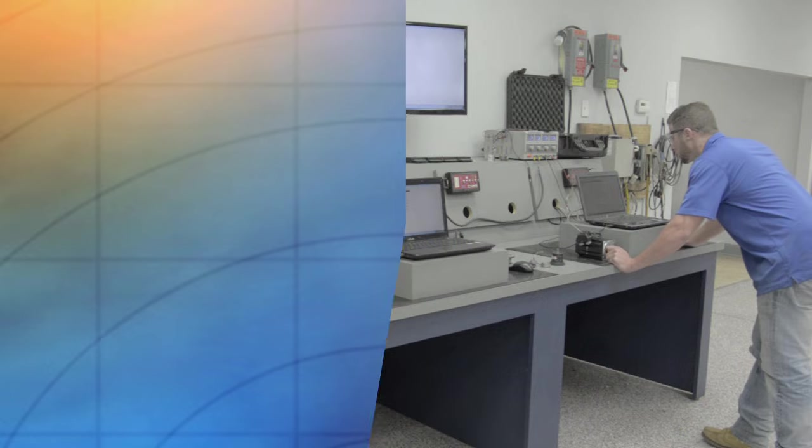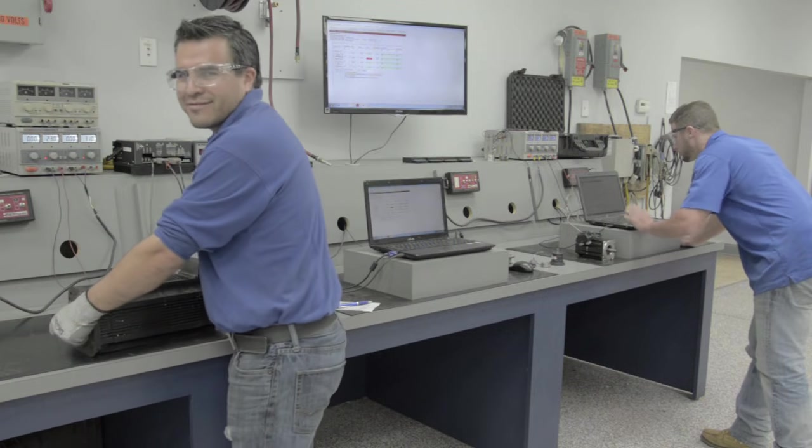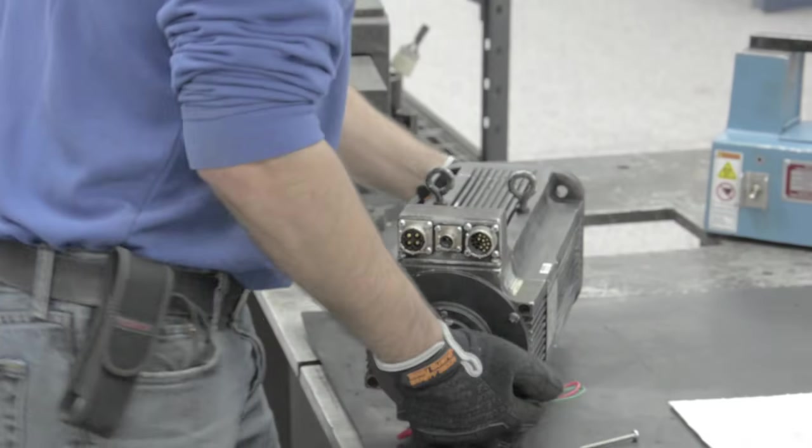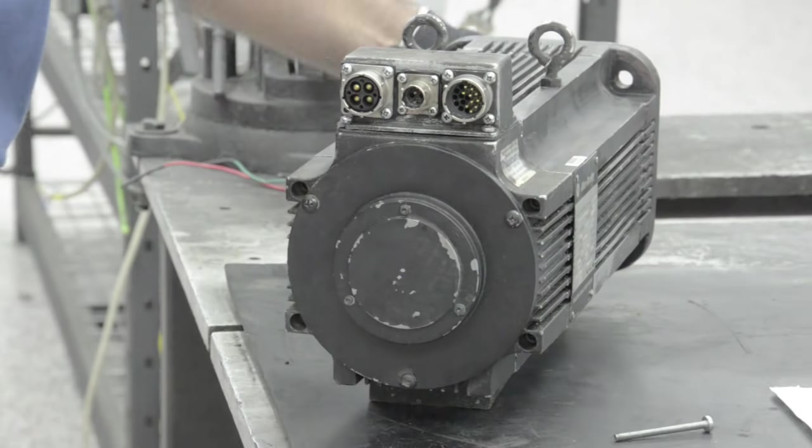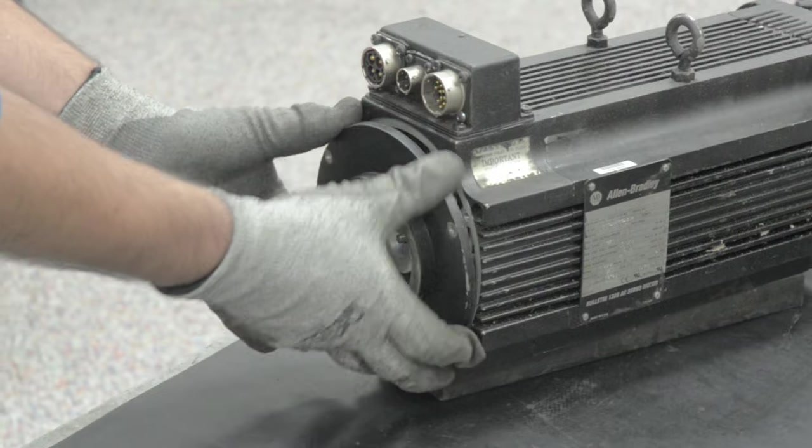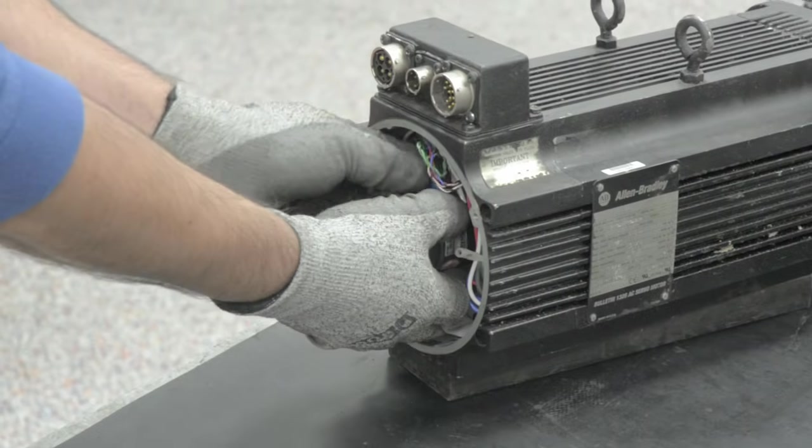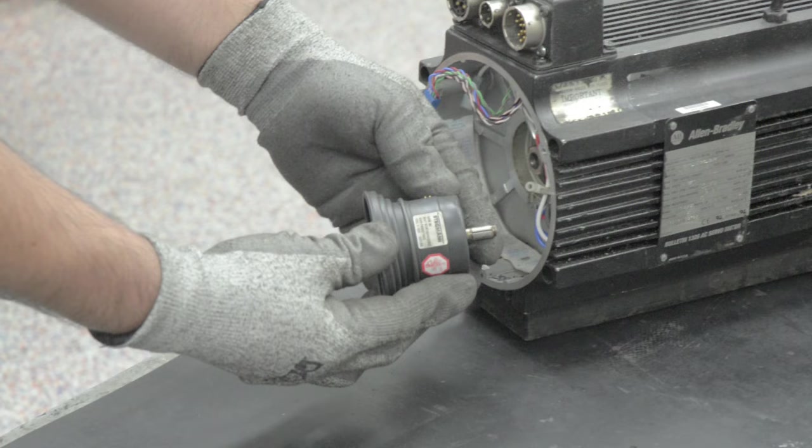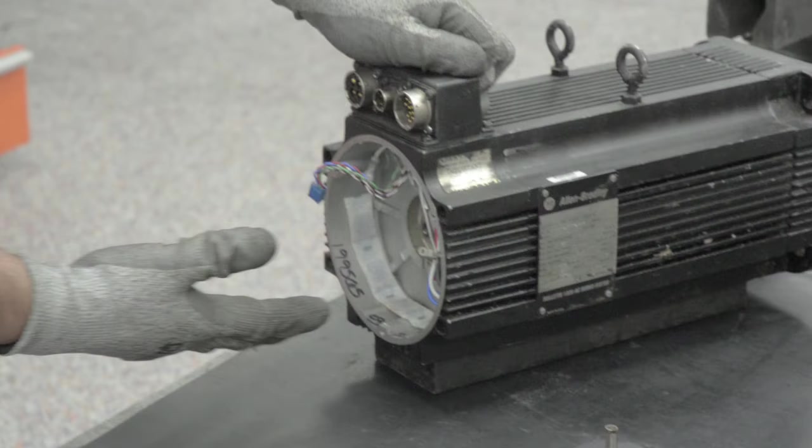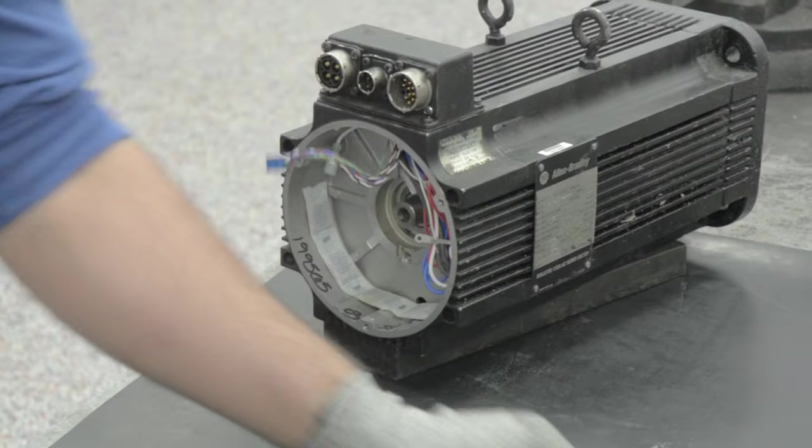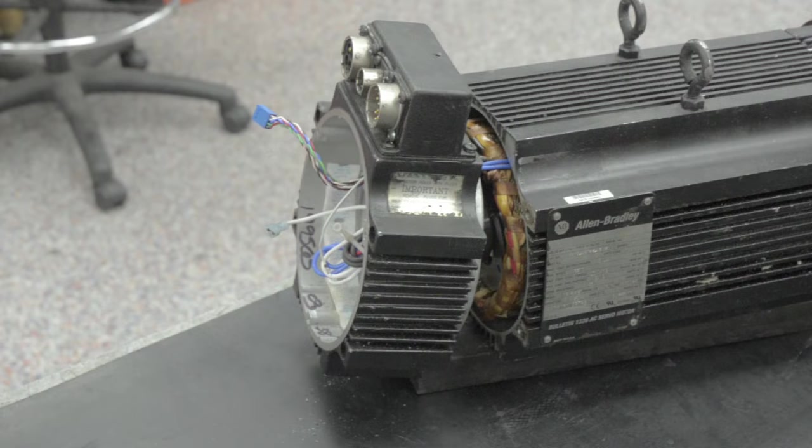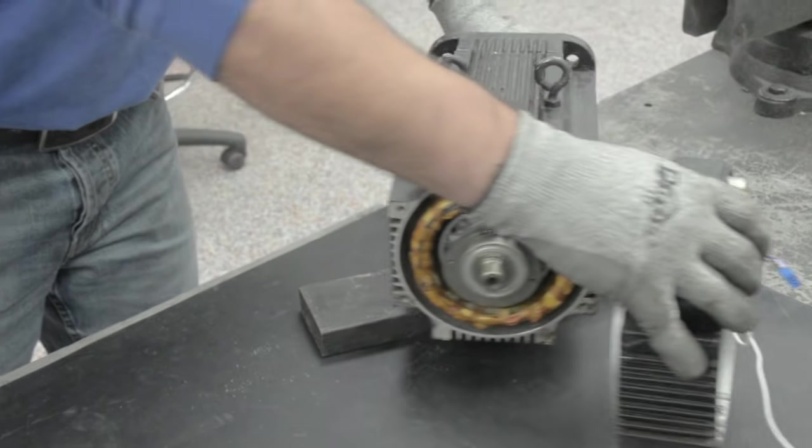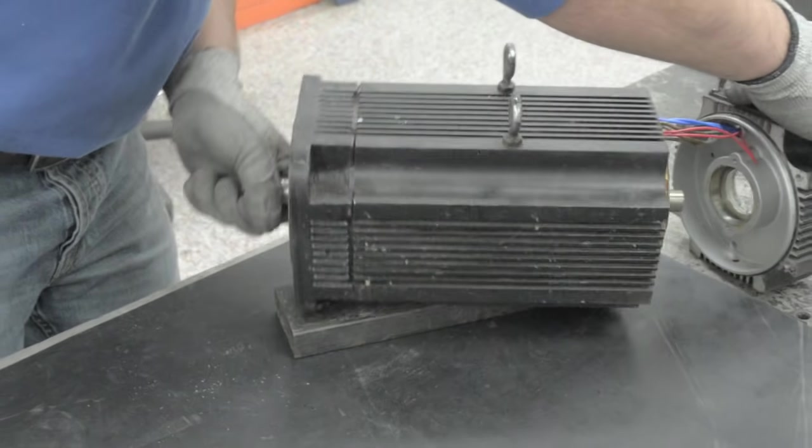Disassembly. Now that we have received a purchase order to approve the repair of this motor from the customer, we will disassemble the motor. First, we will remove the back plate. Second, we will remove the encoder housing and disconnect the wiring. Next, we will remove the end bell and take the encoder down the hall to be repaired on the industrial electronic side. Then we'll clean the motor and dry it.